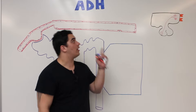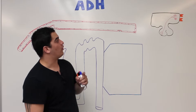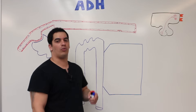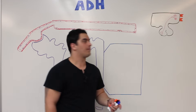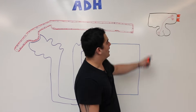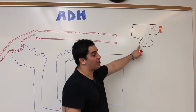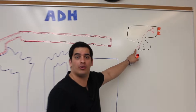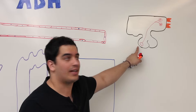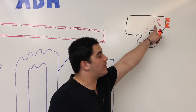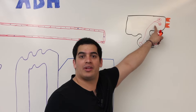In this video we're going to talk about the antidiuretic hormone. The antidiuretic hormone — where is it produced? It's actually secreted in the posterior pituitary, because it's actually made by neurons located within the hypothalamus.